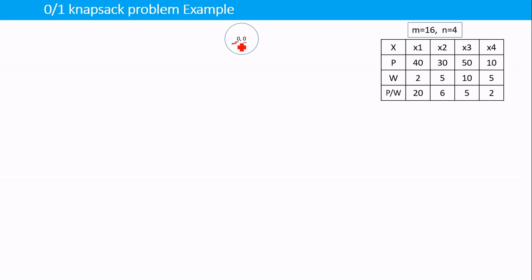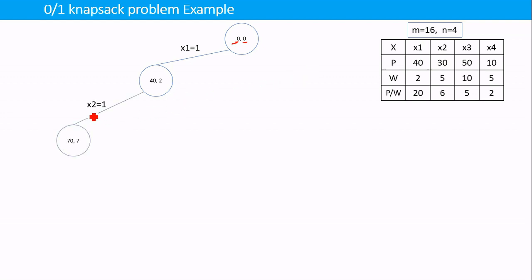We represent two values at each node: profit and weight. Initially both are zero. When we add the first item x1 — setting x1=1 — the entire available item is added. The weight of x1 is 2 and the profit is 40, so current profit is 40 and current weight is 2, which is less than the knapsack capacity. So we can add the next item x2. Setting x2=1, profit becomes 40+30=70 and total weight becomes 2+5=7.